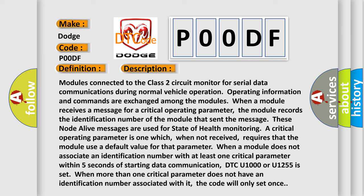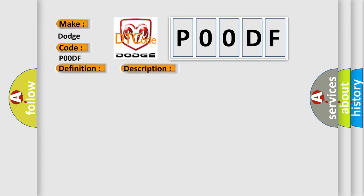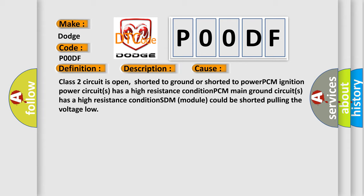This diagnostic error occurs most often in these cases: Class 2 circuit is open, shorted to ground or shorted to power. PCM ignition power circuits has a high resistance condition. PCM main ground circuits has a high resistance condition. SDM module could be shorted pulling the voltage low.